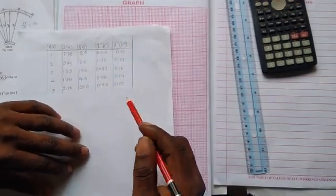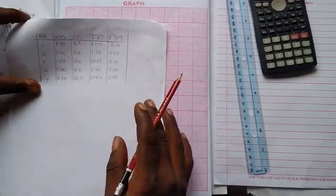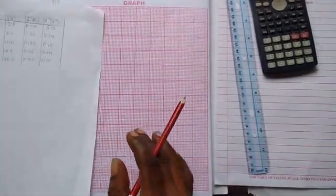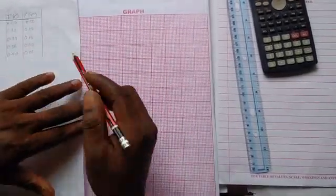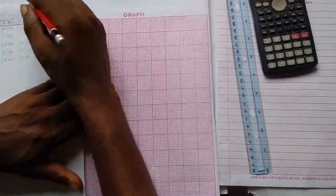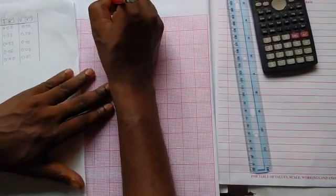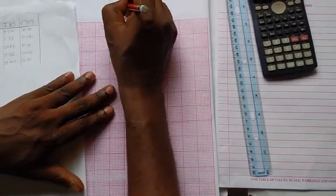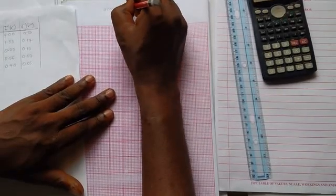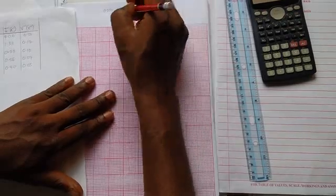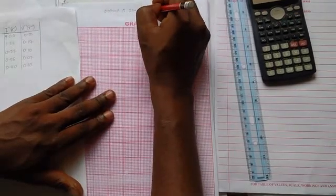Now, we study the trend of our values. I'm just going to take a scale that is convenient for me. Make sure the scale you take can cover at least a third of the graph. What I'm going to do is study it carefully. I'll be using 0.05 unit to 2 centimeter on V reciprocal axis.